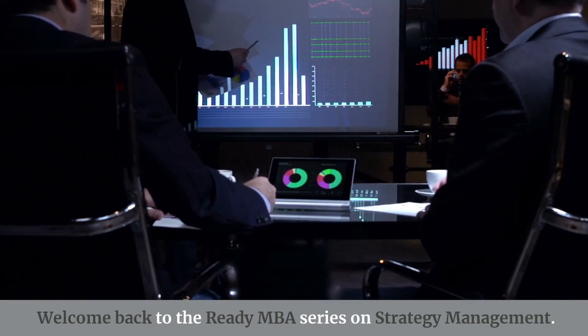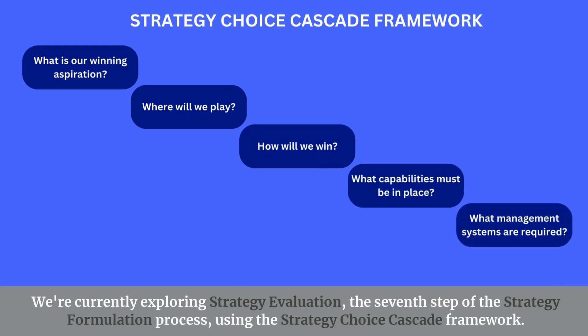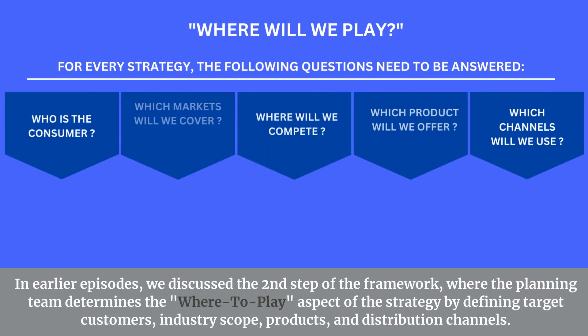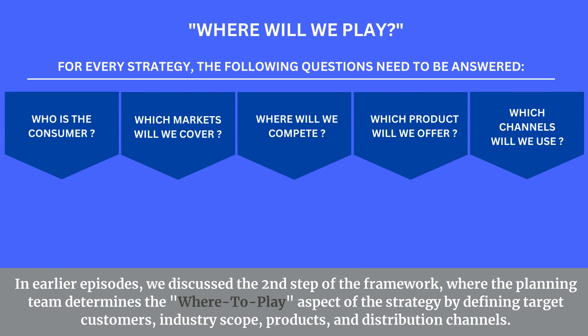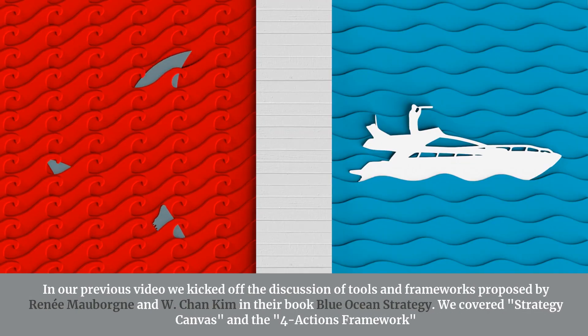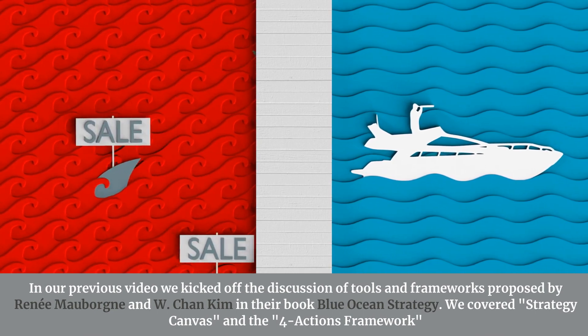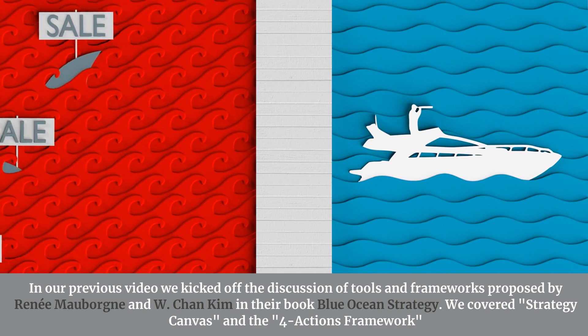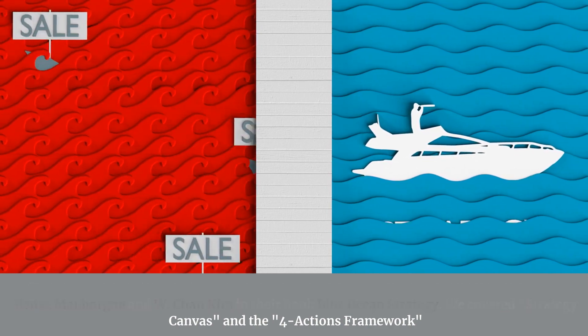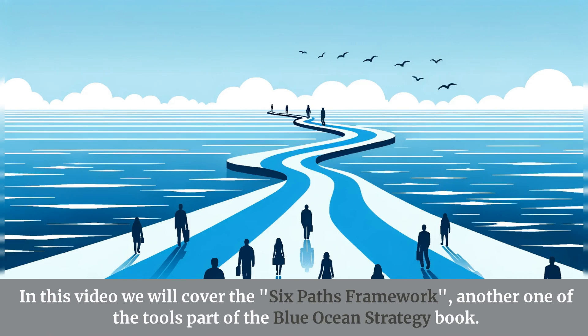Welcome back to the Ready MBA series on Strategy Management. We're currently exploring Strategy Evaluation, the seventh step of the strategy formulation process, using the Strategy Choice Cascade Framework. In earlier episodes, we discussed the second step of the framework, where the planning team determines the 'where to play' aspect of the strategy by defining target customers, industry scope, products, and distribution channels. In our previous video, we kicked off the discussion of tools and frameworks proposed by Renee Malbourne and W. Chan Kim in their book Blue Ocean Strategy. We covered the Strategy Canvas and the Four Actions Framework. In this video, we will cover the Six Paths Framework, another one of the tools part of the Blue Ocean Strategy book.